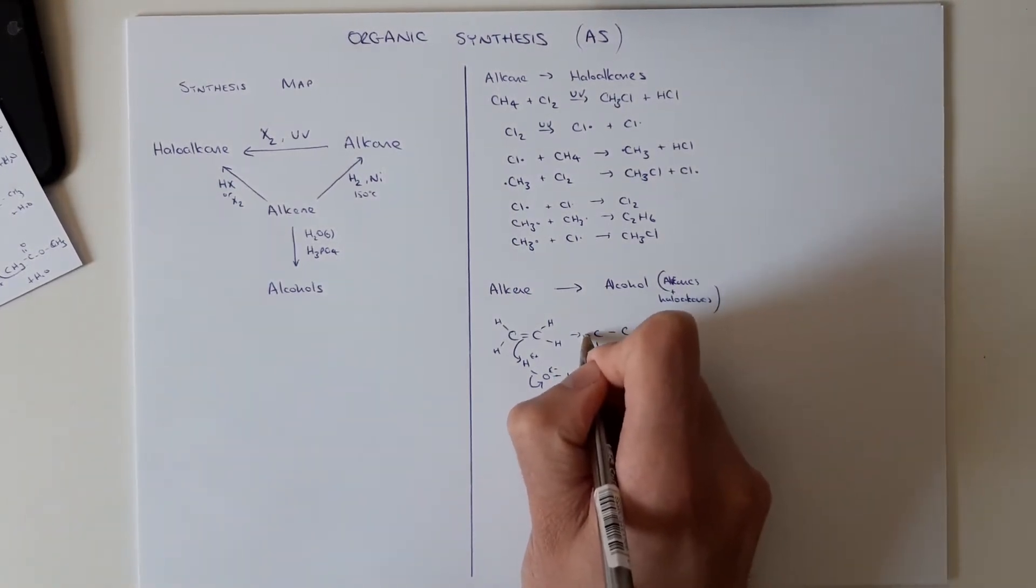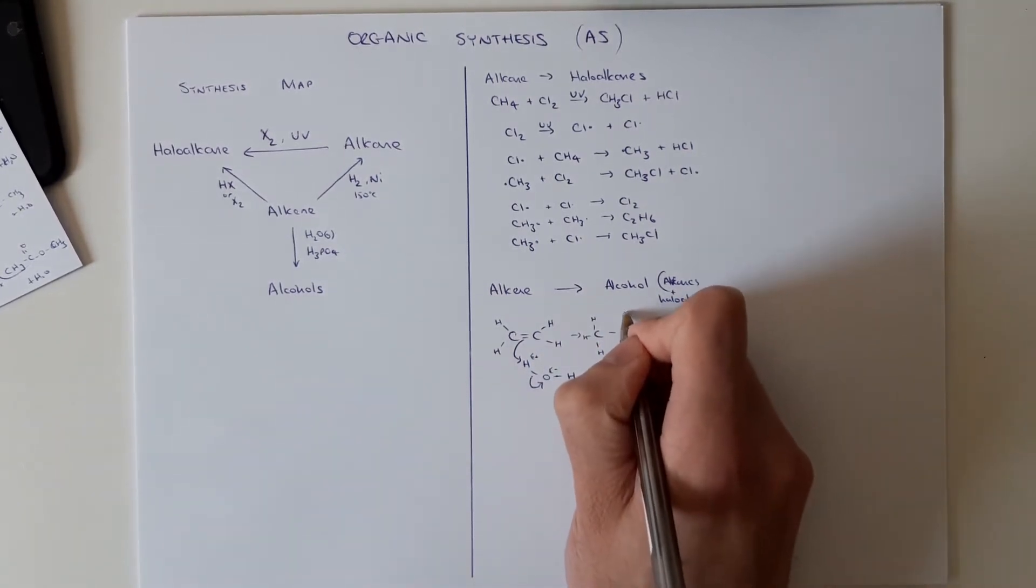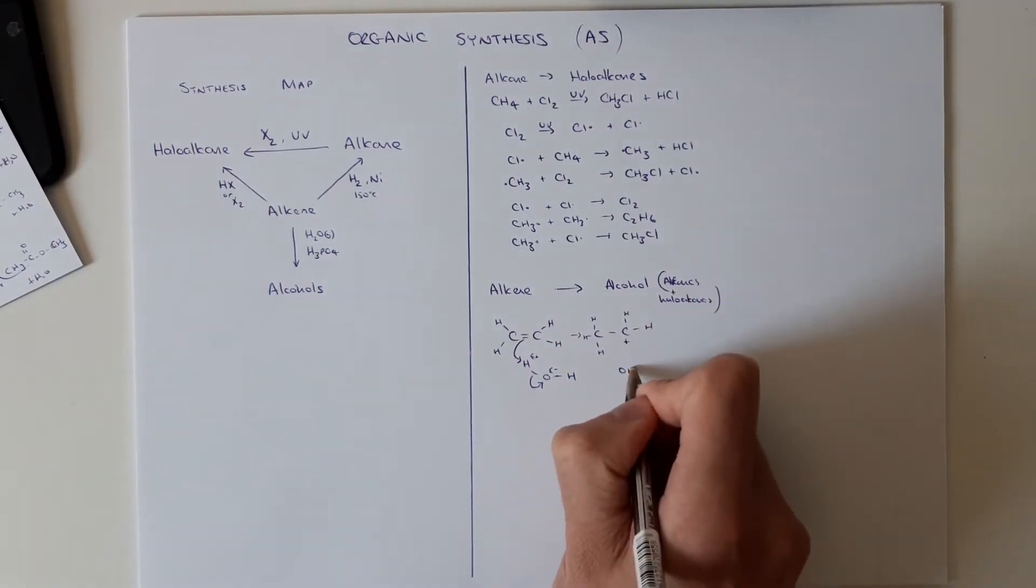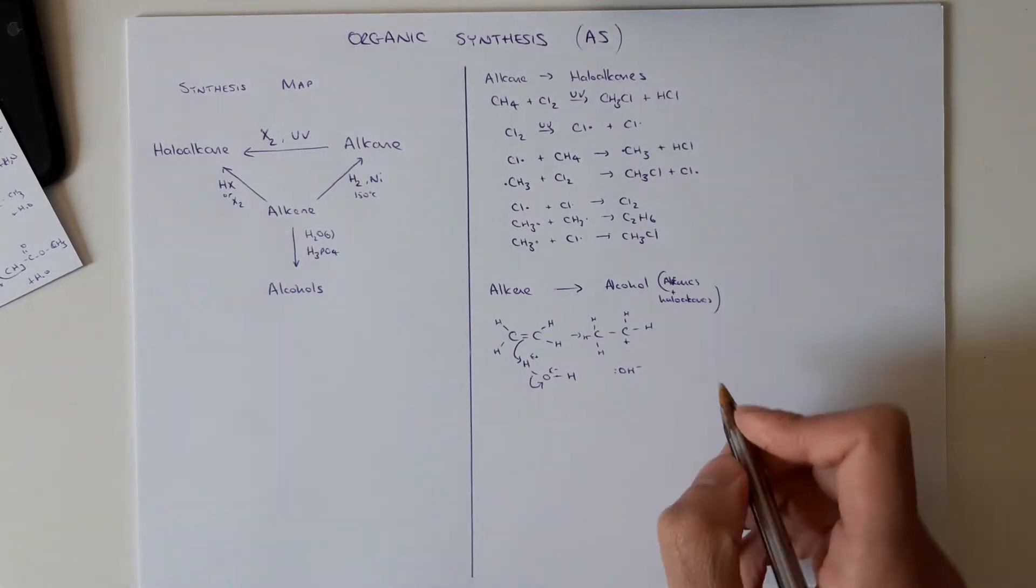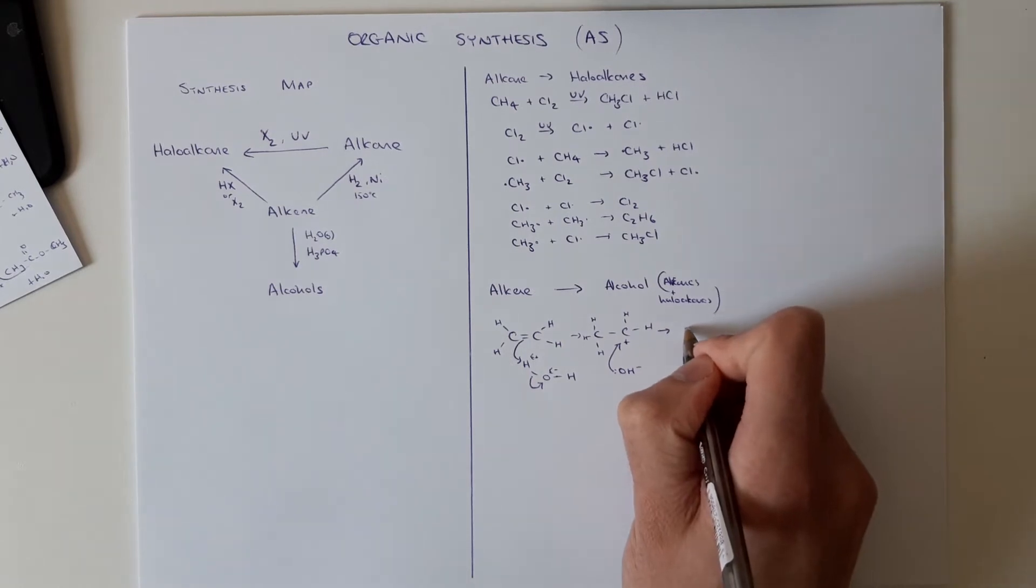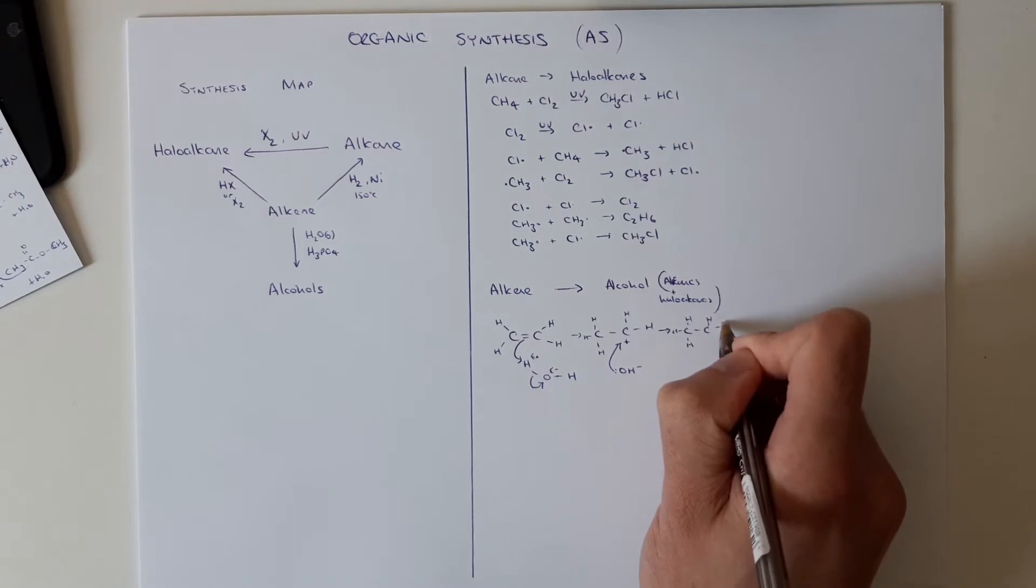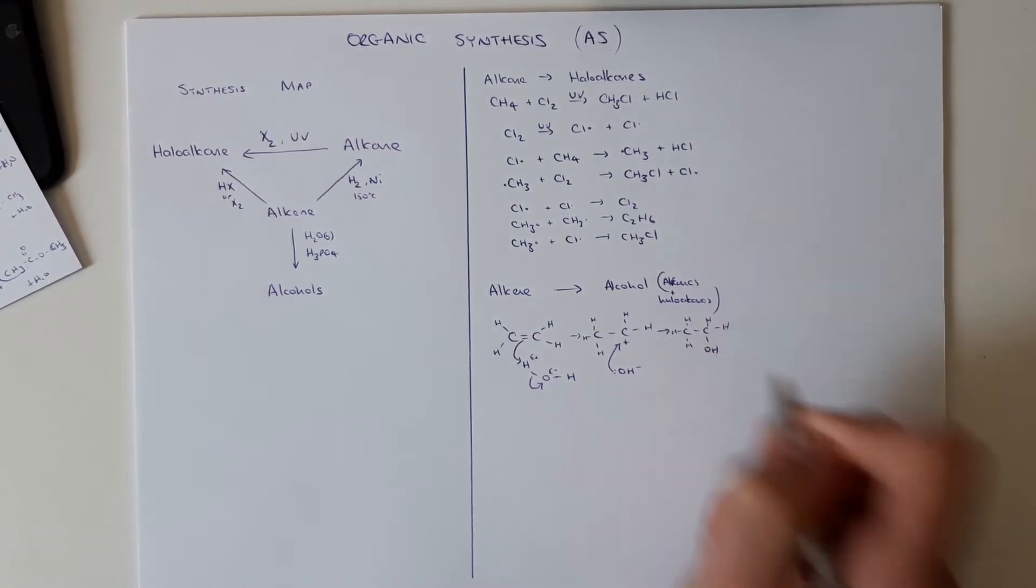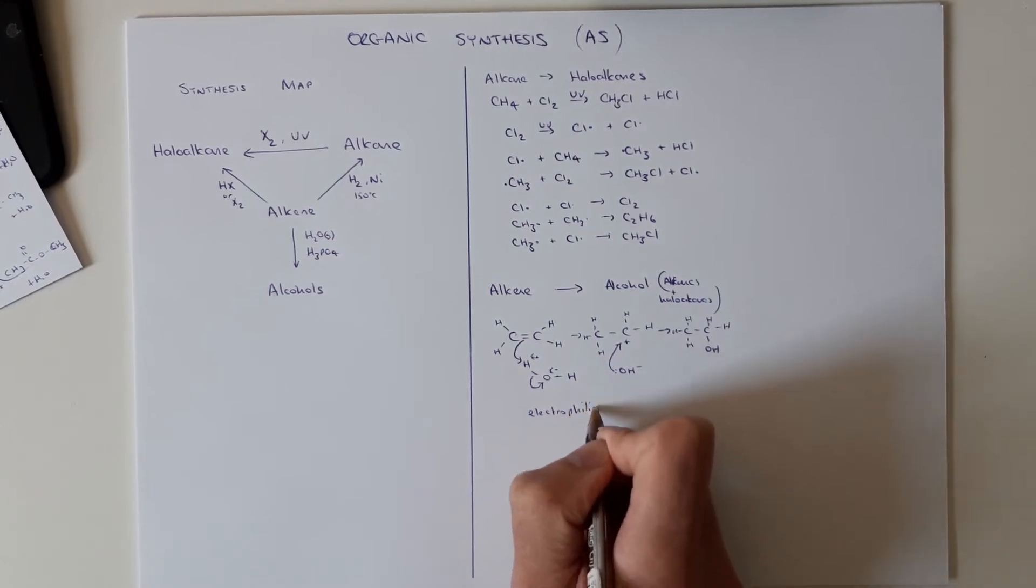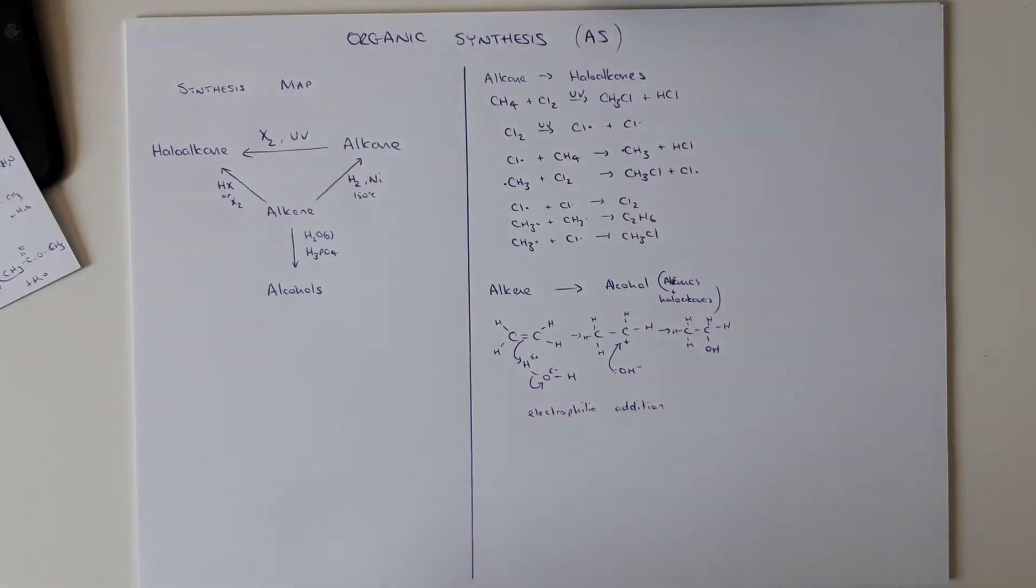Don't have to look at Markovnikov's rule on this because we've got two equal carbons. So that leaves us with one of the carbons with a positive sign and our OH negative hydroxide from the water. And that's going to come back in, attack and leave us with our alcohol. This is electrophilic addition mechanism and it's one you need to be familiar with.